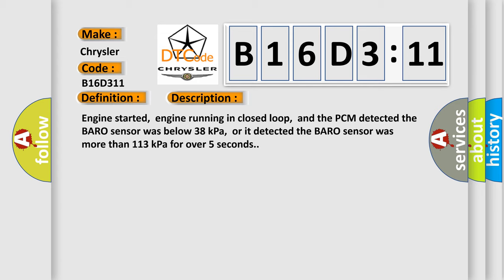Engine started, engine running in closed loop, and the PCM detected the baro sensor was below 38 kilopascals, or it detected the baro sensor was more than 113 kilopascals for over 5 seconds.